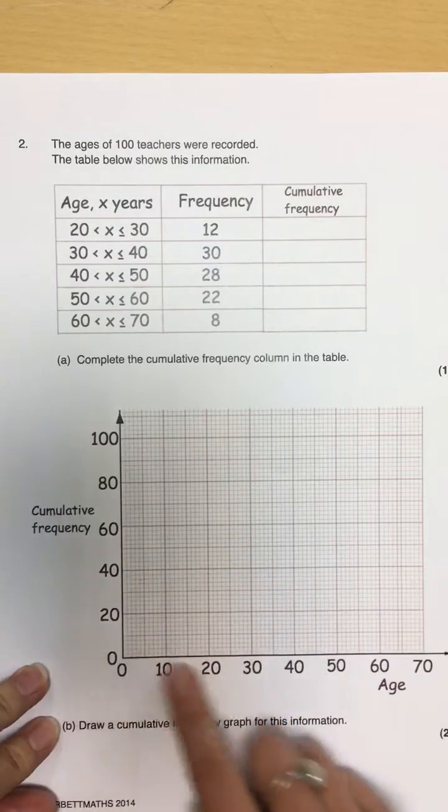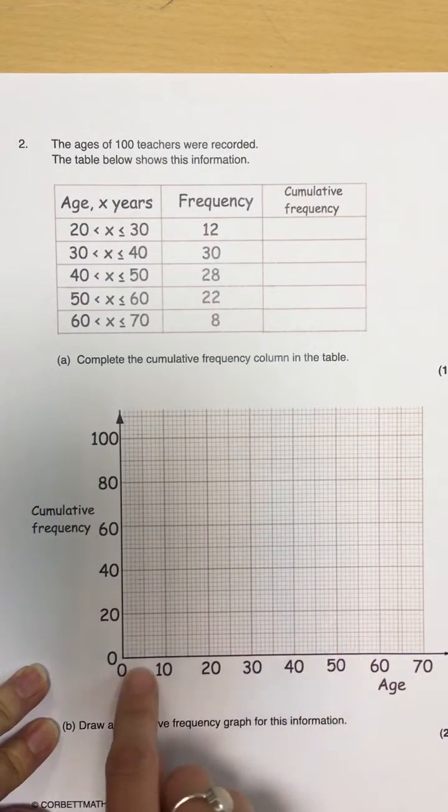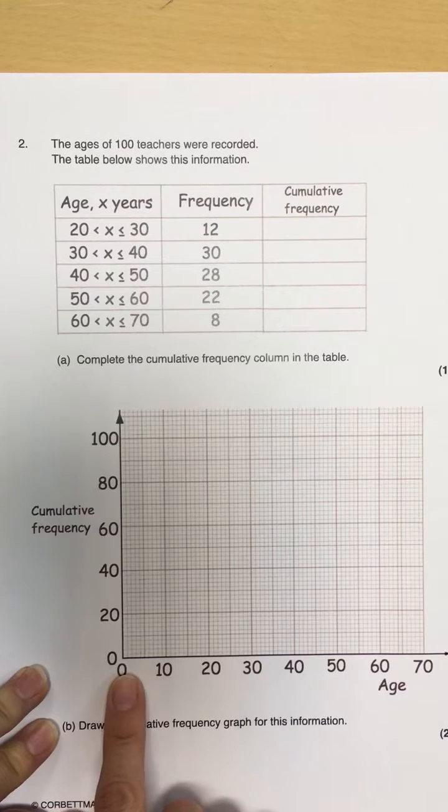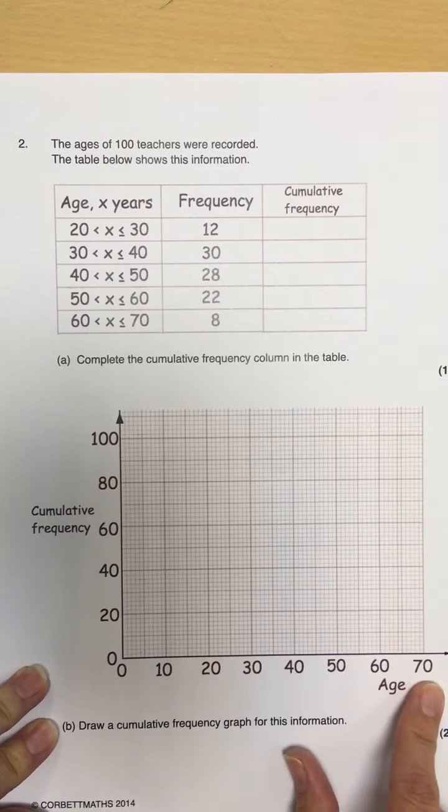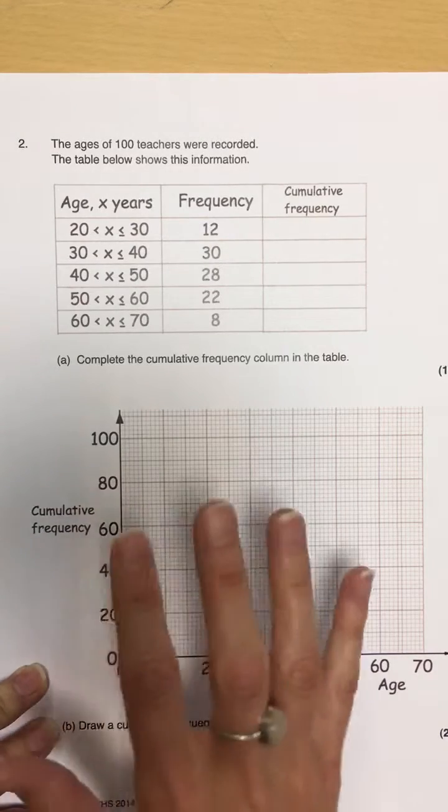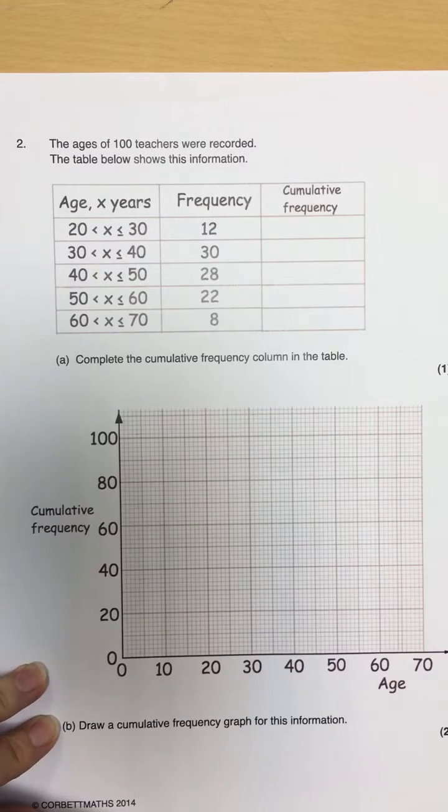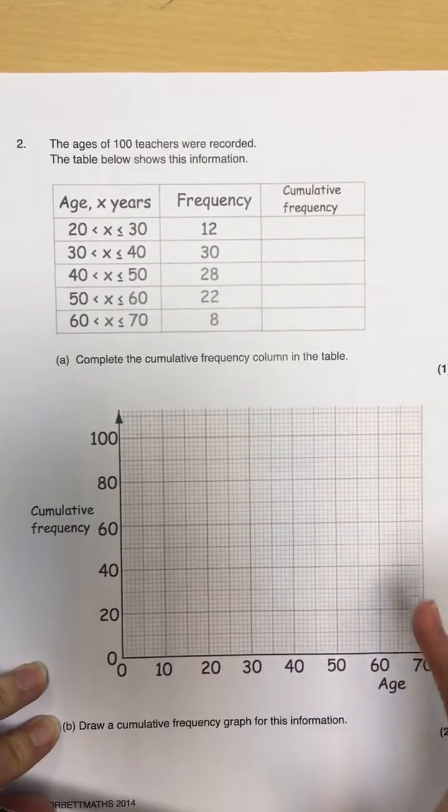And also you see a graph that you have to complete where you've got some sort of continuous data across the bottom. And going up the side, cumulative frequency. Not frequency, cumulative frequency, that's the difference. We're not drawing just a basic plot coordinate. We have to do something additional.